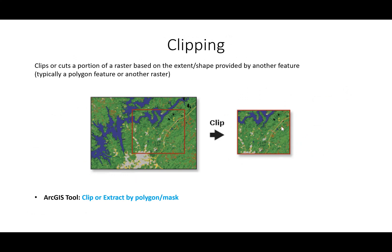Another common operation is clipping. When a raster dataset covers a much larger area than needed, you can clip it to remove the areas you don't need. Clipping can be performed using a vector dataset such as a polygon, or using another raster dataset that defines your study area. The tools in ArcGIS are Clip, Extract by Polygon, or Extract by Mask.